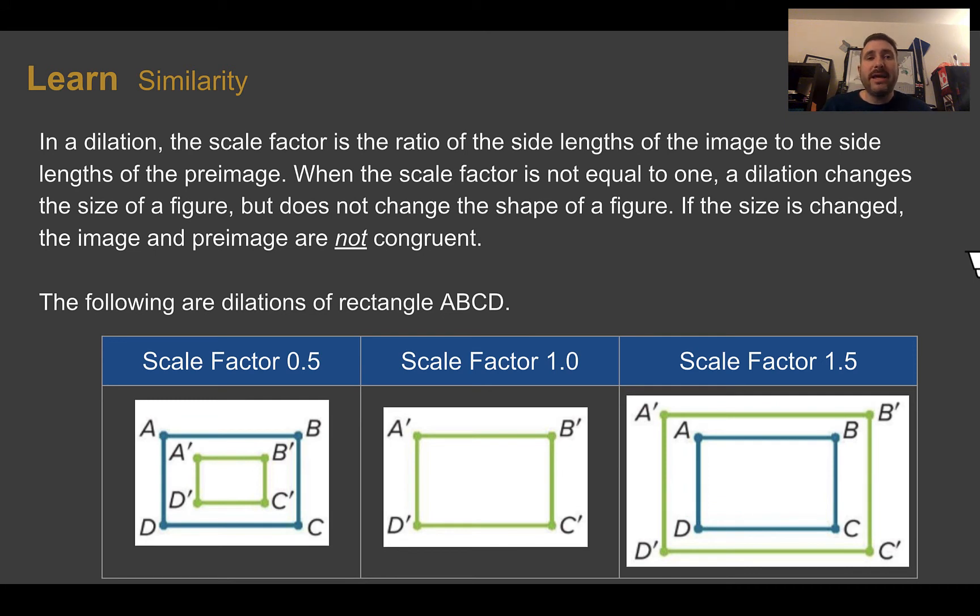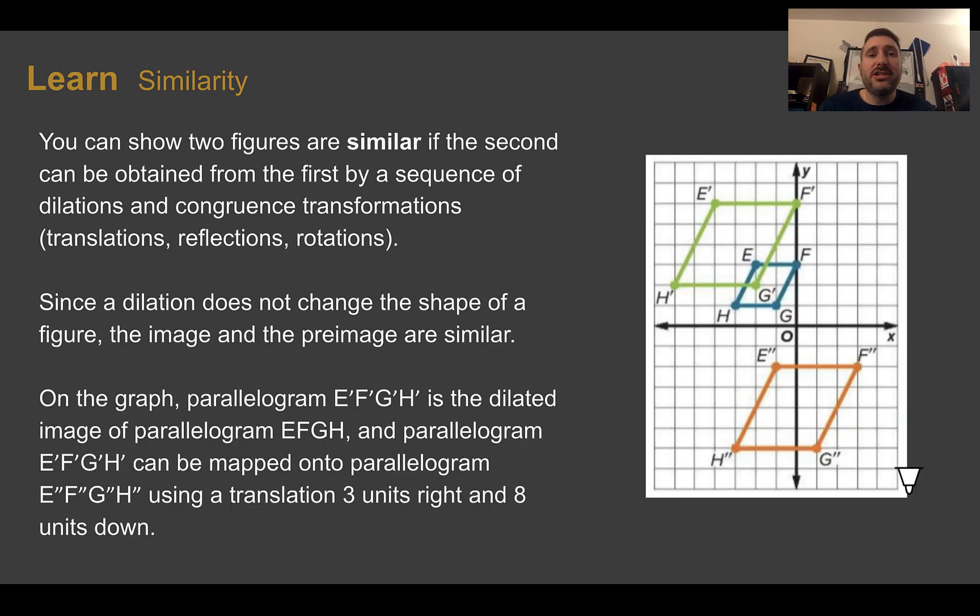Let's learn similarity. In a dilation, the scale factor was the ratio of the side lengths of the image to the side lengths of the preimage. When the scale factor is not equal to 1, the dilation changes the size of the figure, but doesn't change the shape. If the size is changed, then that means that the image and preimage are no longer congruent. So if you remember back in the previous lessons, we kept mentioning the word congruent or congruence. That meant they had the same size and the same shape. So here they have the same shape, but not the same size. So they are not congruent anymore. With dilations, since it changes the size but not the shape, they are what are called similar.